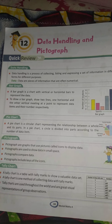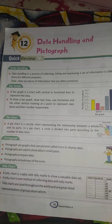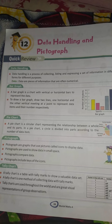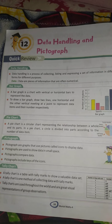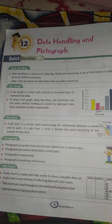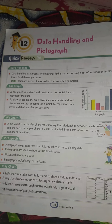We have studied this in the first book. So what is data handling? It is a process where we collect information and show it in different forms for different purposes. This means you have a list of information that we can show in several types.